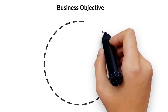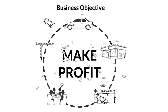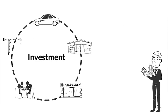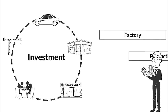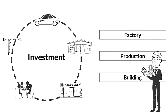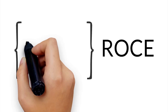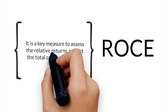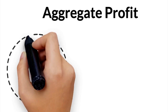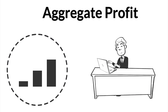To begin, the major objective of any business is to make profit. But in order to earn profit, every entrepreneur has to invest capital in the factory, production activities, building the inventory, among other things. Hence, it becomes essential to understand the term return on capital employed, as it is a key measure to assess the relative returns against the total capital employed. In simpler terms, it depicts the aggregate profit earned from the investments done by the entrepreneur or company.